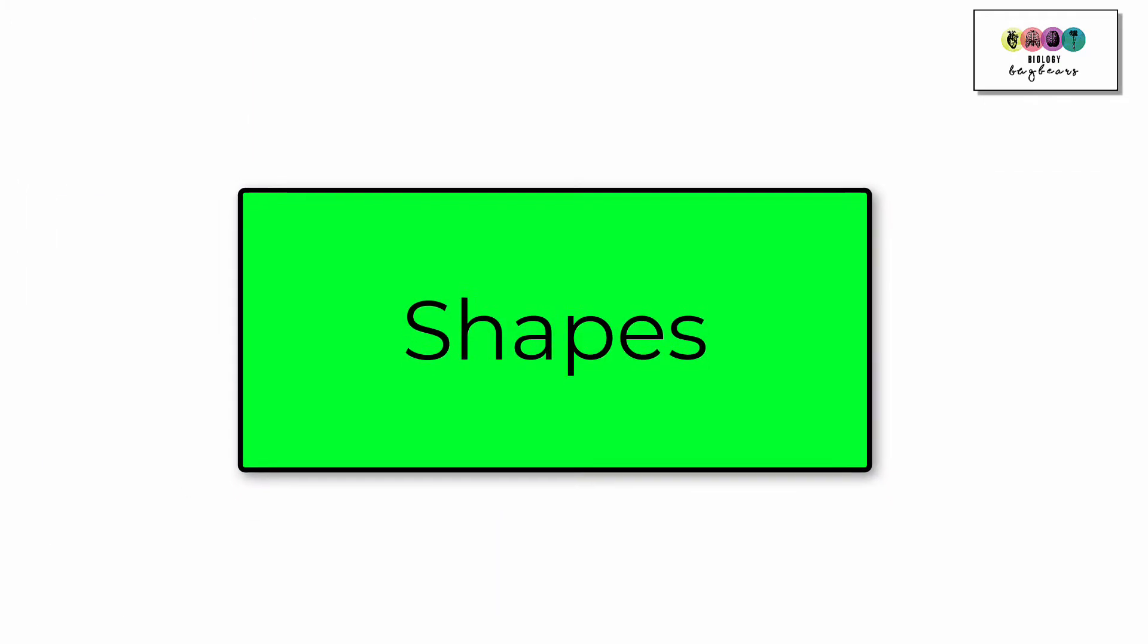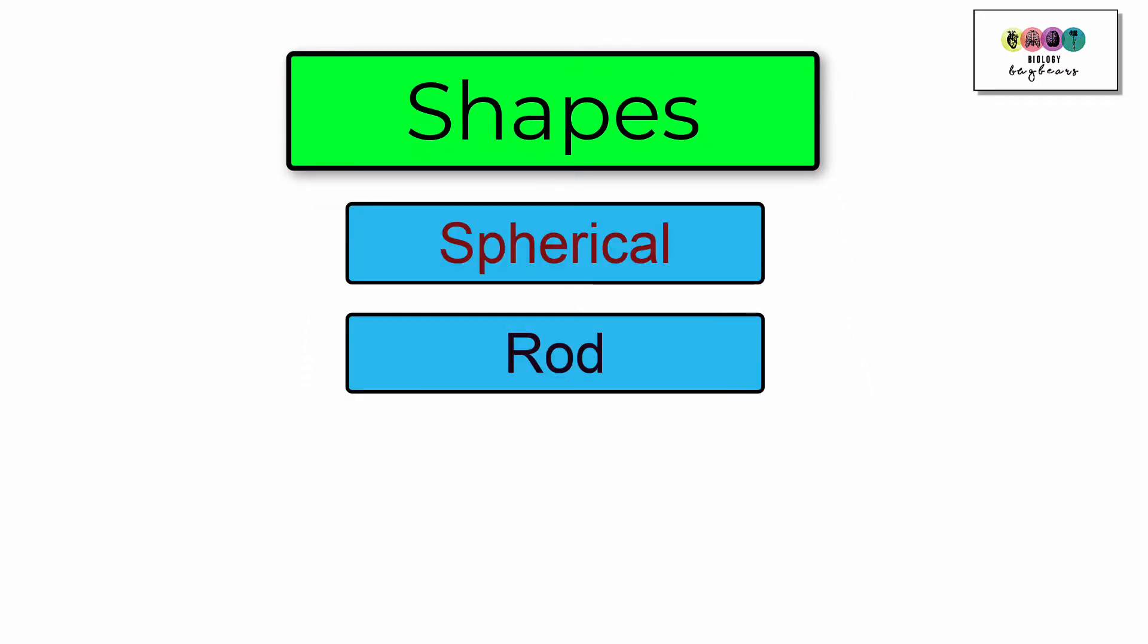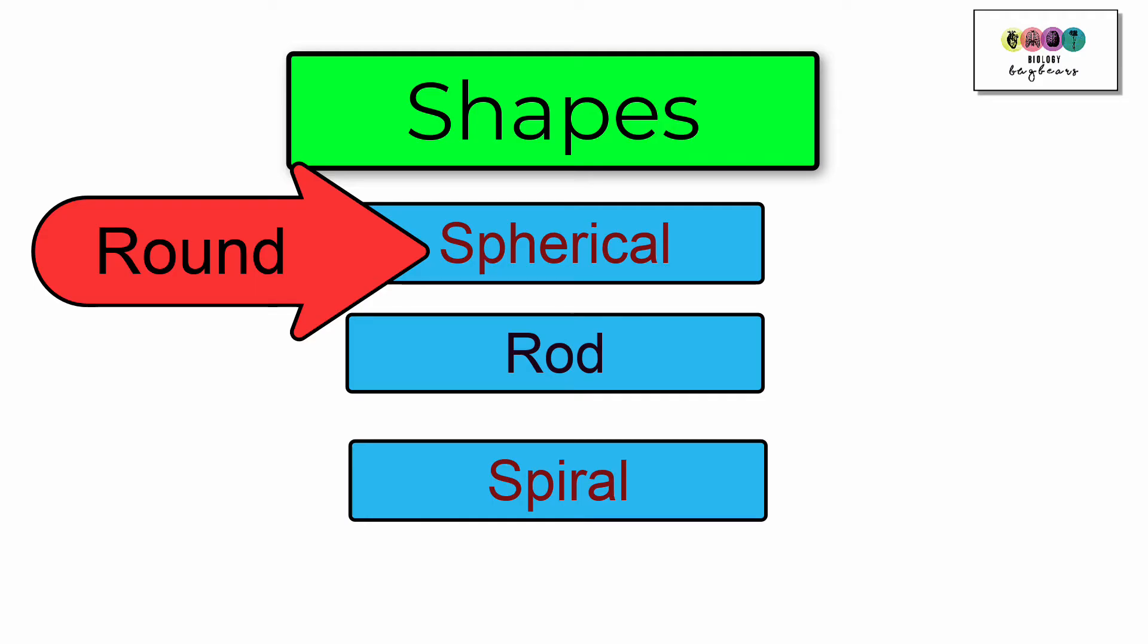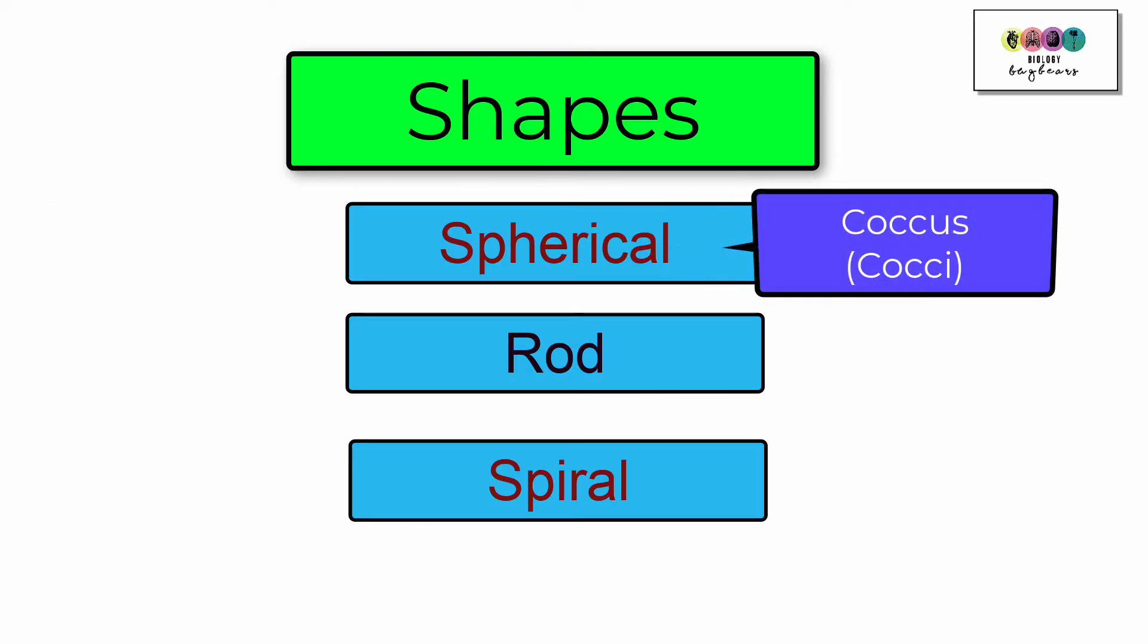Bacteria are generally one of three shapes. They're either spherical, rod-shaped, or spiral. We used to refer to spherical as round-shaped and in some books this is still the case. However, if you look at recent marking schemes it's important that you state that they are spherical shaped or coccus for one or cocci for the plural.